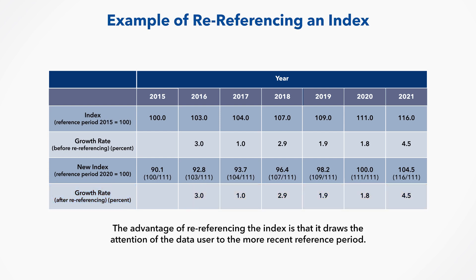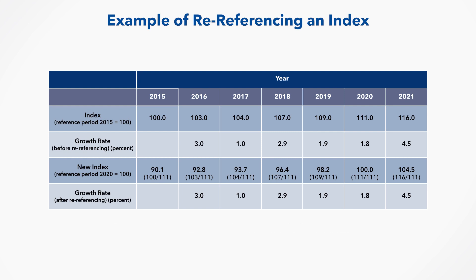The advantage of re-referencing the index is that it draws the attention of the data user to the more recent reference period. For example, a user may need to use a calculator to learn that the change from 111 in 2020 to 116 in 2021 is a 4.5% increase. With 2020 as the reference period, though, the user can immediately see that the change from 100 to 104.5 is a 4.5% increase. Because users tend to be more interested in recent periods, it is convenient to have a recent reference period.